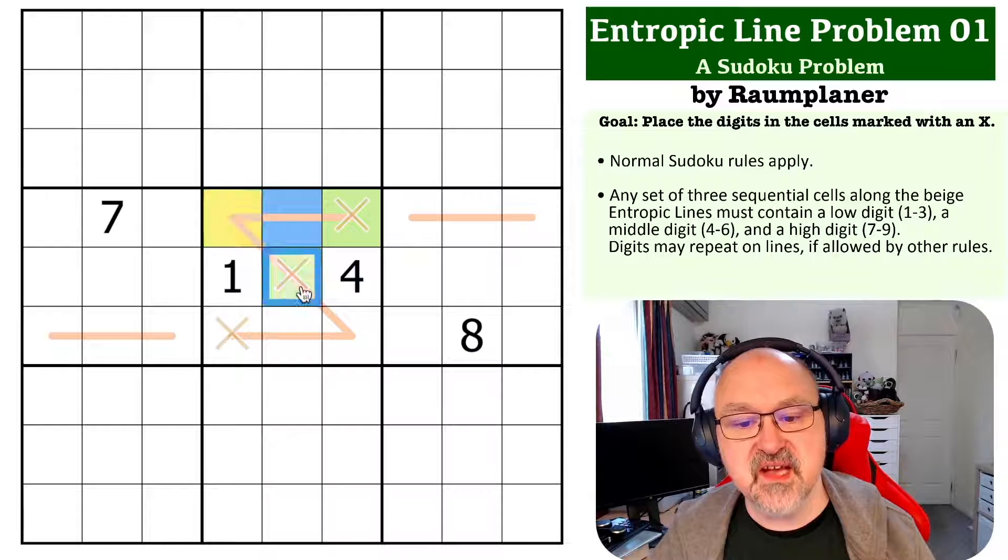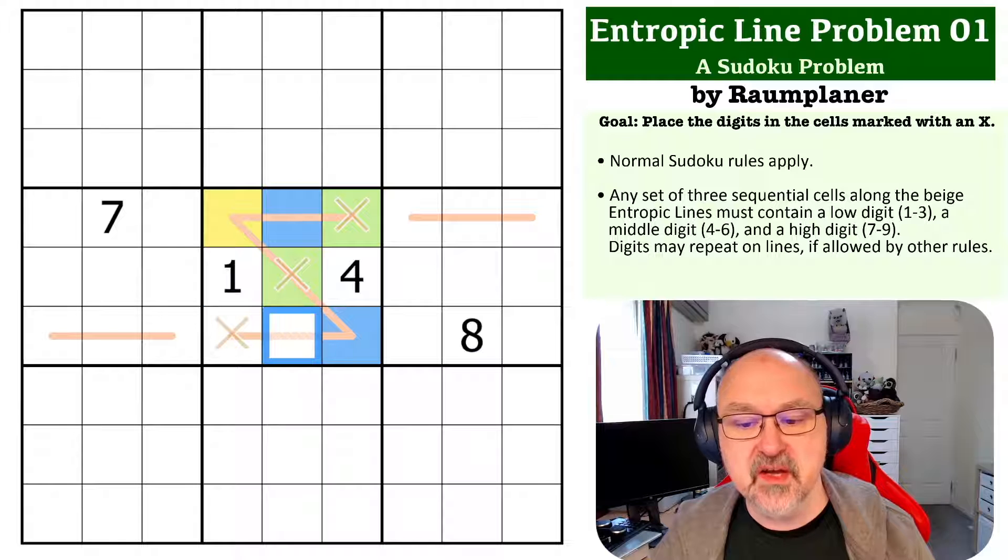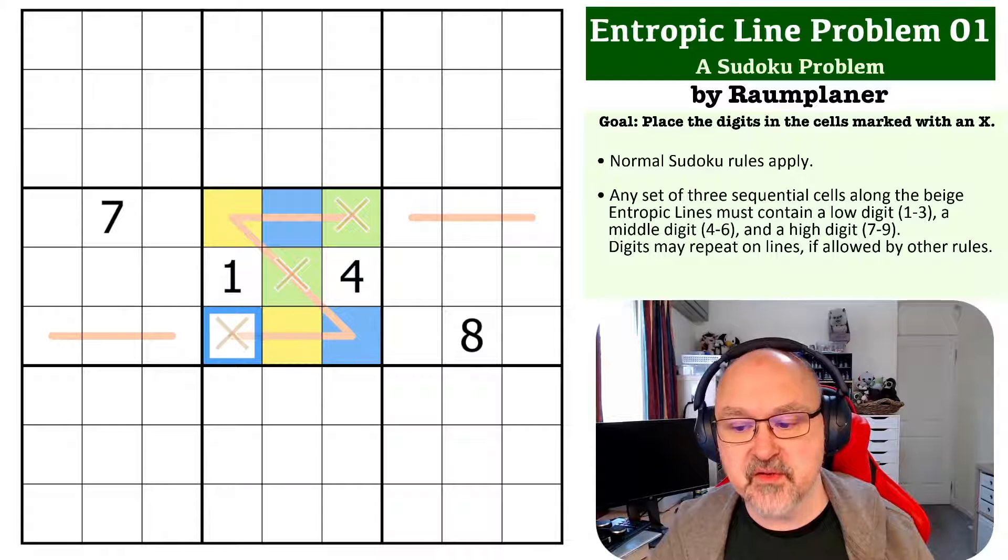And because in this set I'm missing a blue, this will be blue. And every third cell along the line will have to be the same if you've got a line that's longer than three. So this would have to be yellow, and this would have to be green.